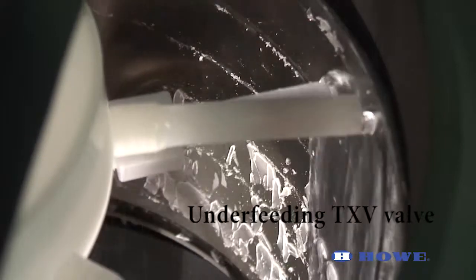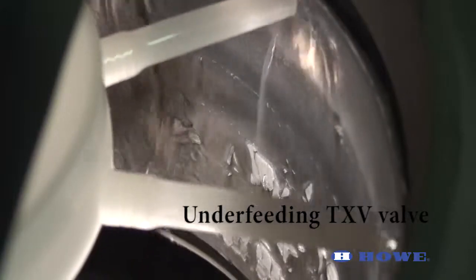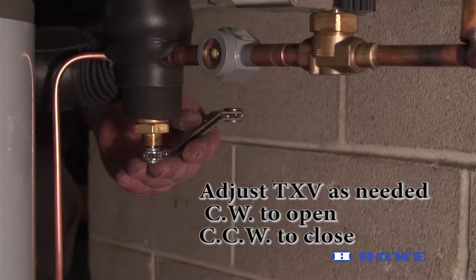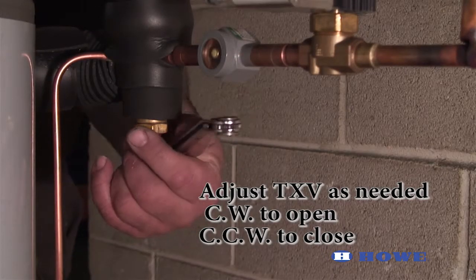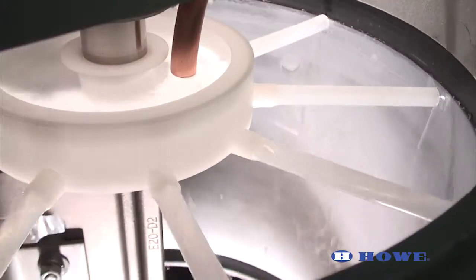If ice near the bottom is freezing but not harvesting, then the expansion valve is underfeeding and must be opened to allow more refrigerant into the evaporator. Open an underfeeding expansion valve by turning the valve adjustment stem out one quarter turn at a time. Wait between each adjustment to allow the TXV to balance out.